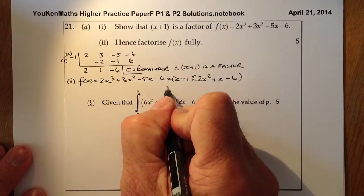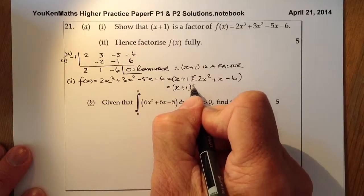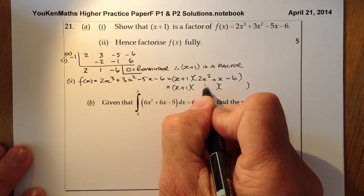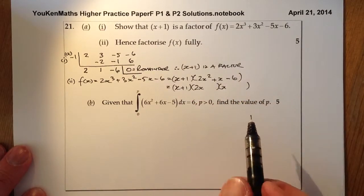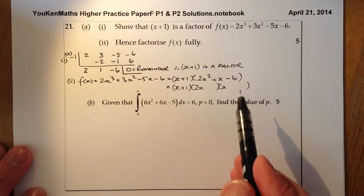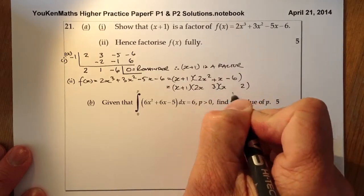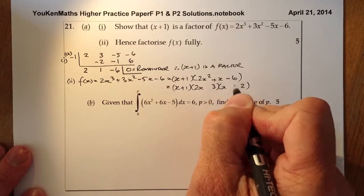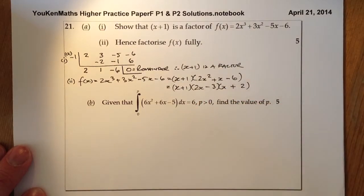To factorise it fully, I'll factorise this quadratic into two brackets: 2x and then we'll go 2 and 3 here. That gives 4, that gives 3, the difference is 1, so this will be positive and this negative. That's the first 5 marks complete.